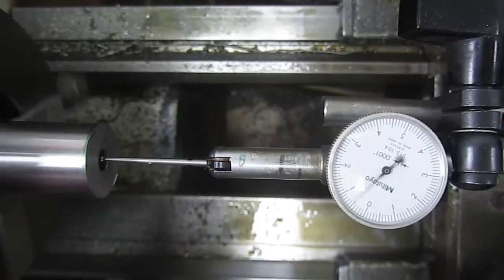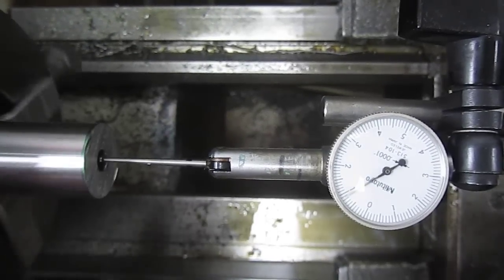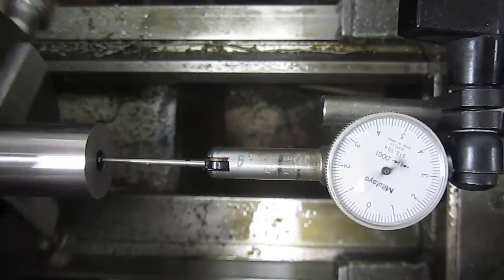We've got the barrel in the lathe. This is a 1 tenth indicator with a stylus that's twice as long so it's essentially a 2 tenth.